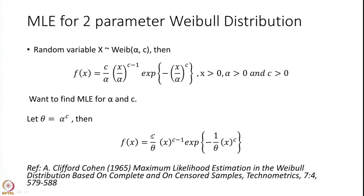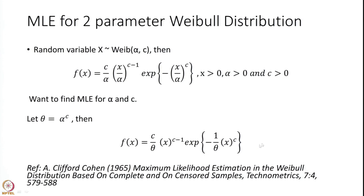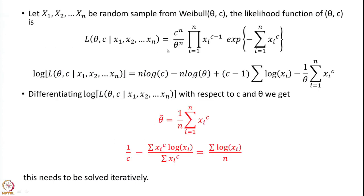Here C is as it is, so only alpha is replaced by theta. Let x1, x2, ..., xn be a random sample with a Weibull distribution with the changed parameters theta and C. Then the likelihood function of theta and C is simply a product of the N PDFs. Taking the logarithm, it becomes: N log C minus N log theta plus (C minus 1) summation of log xi minus (1/theta) summation of xi to the power C.